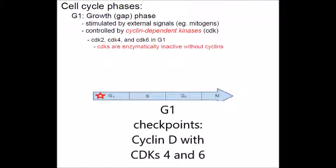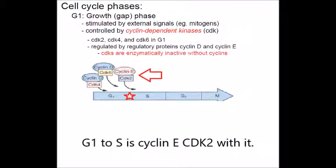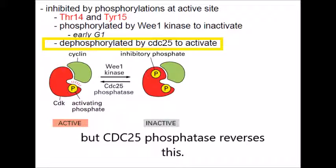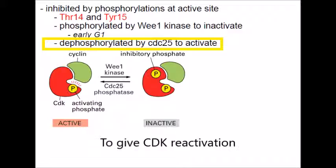G1 checkpoint: cyclin D with CDK 4 and 6. G1 to S is cyclin E with CDK 2. CDK is stopped by Wee1 kinase phosphorylation at residues 14 and 15. CDC25 phosphatase dephosphorylates those sites to give CDK reactivation.